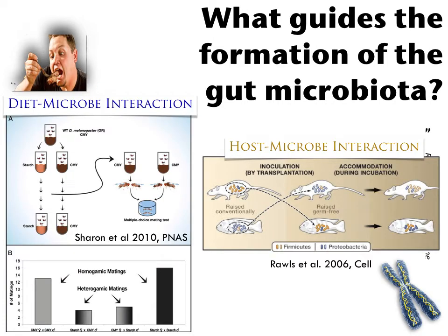Two things guide the formation of the gut microbiota: diet affects the type of microbiome in our guts, and host genetics can affect the structure and composition of the microbiota. A 2010 paper by Sharon et al. showed laboratory reproductive isolation — taking a single Drosophila melanogaster strain reared on two different types of media for several generations showed reduced mating between flies from different media. The gut microbiota had changed substantially on the two different media, and curing the gut microbiota rescued the mate discrimination.